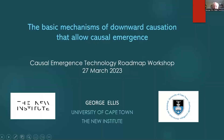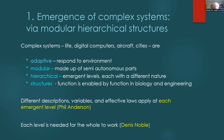This talk is going to be very different from the last one — it's a very conceptual rather than a computational talk. I want to talk about the basic mechanisms of downward causation that allow causal emergence. The emergence of complex systems — genuine complexity — always takes place via modular hierarchical structures, where every single word is very important.